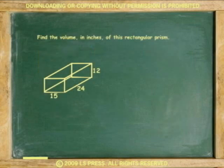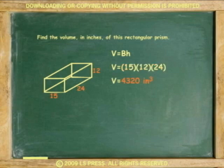For example, find the volume in inches for this rectangular prism. The volume of the prism equals 15 times 12 times 24 or 4,320 cubic inches.